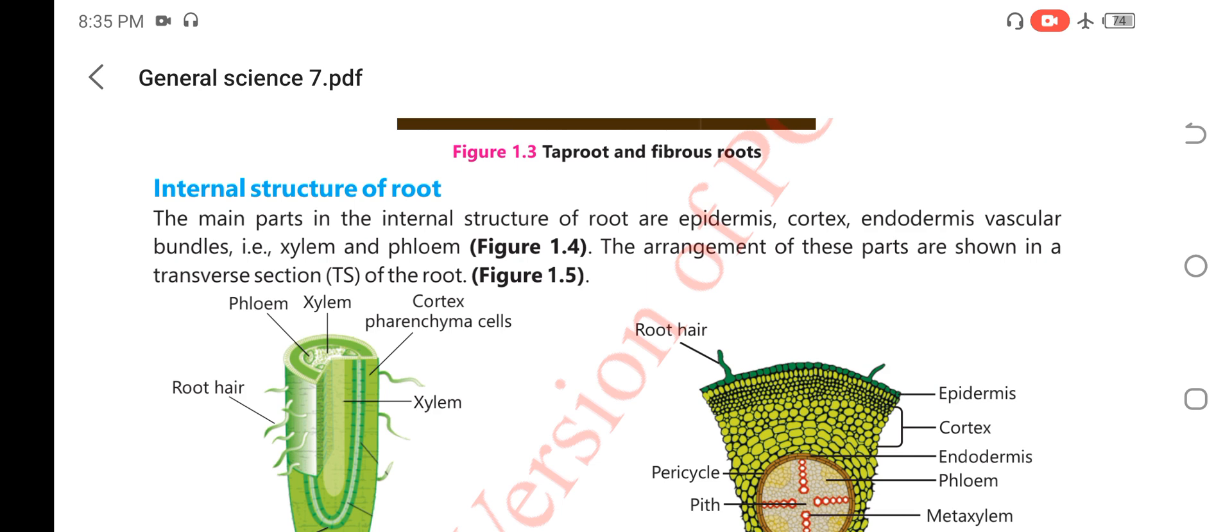The main parts in the internal structure of root are epidermis, cortex, endodermis, vascular bundle, xylem and phloem. The arrangement of these parts are shown in a transverse section of the root.